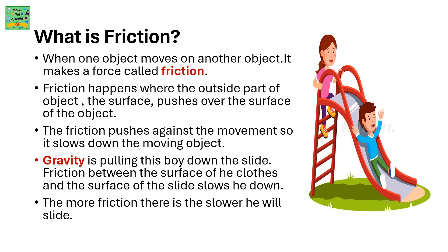Friction happens when the outside part of the object, known as the surface, pushes over the surface of the object. The friction pushes against the movement to slow down the moving object.